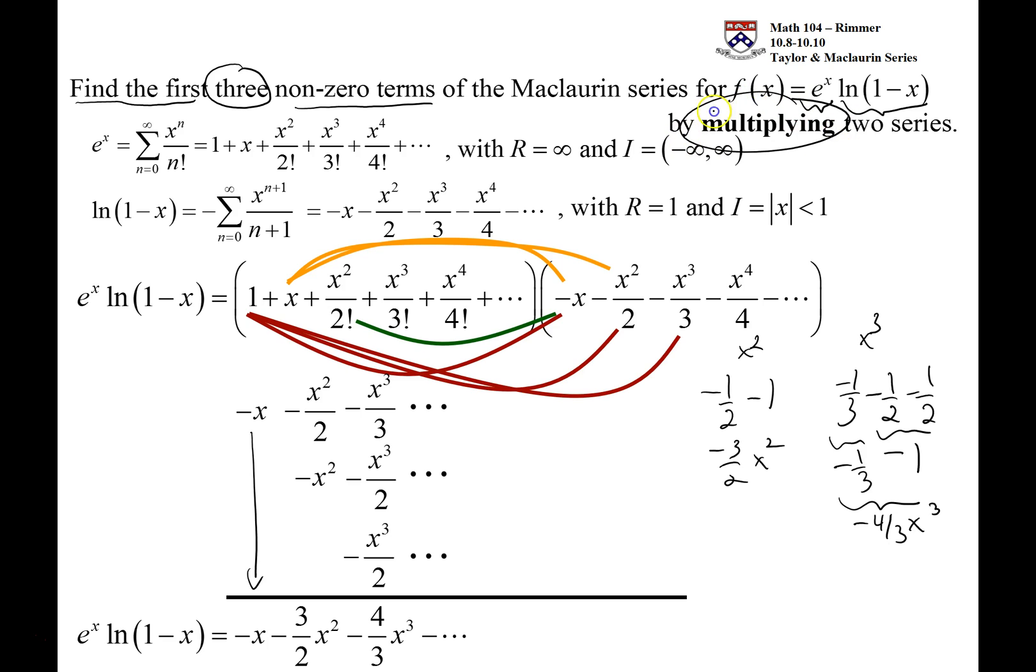And what we did was we multiplied two series together. When the question comes in about, well, what x's does this converge for, remember, now the e to the x power series converged everywhere. The interval was minus infinity to infinity, the whole interval line. But the log of 1 minus x's power series only converged where we had absolute value of x less than 1. And so that's x's between minus 1 and 1.